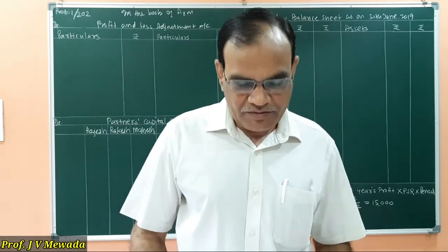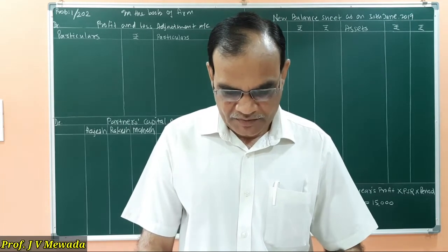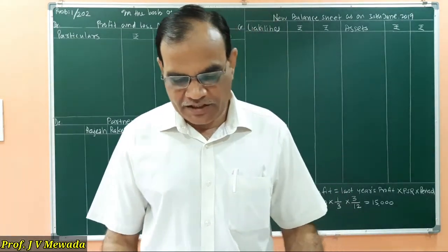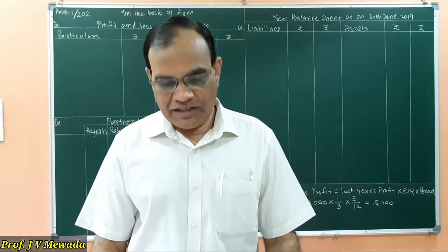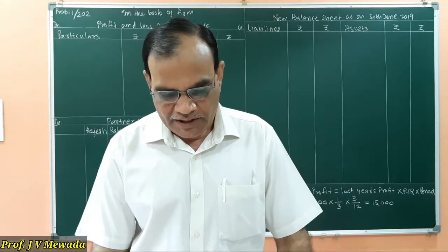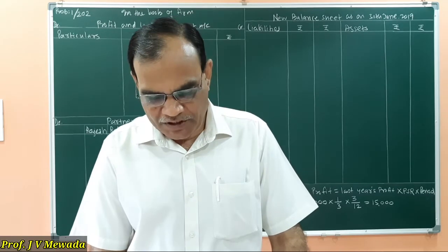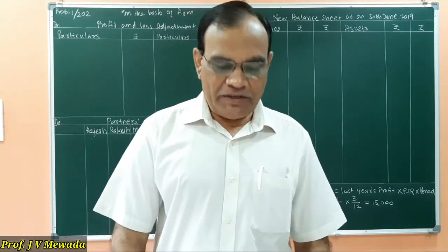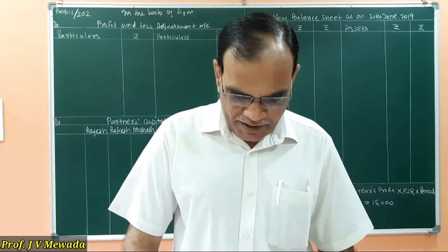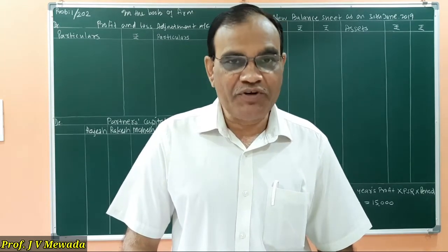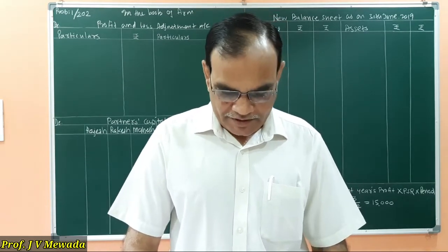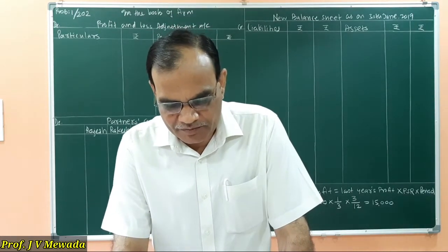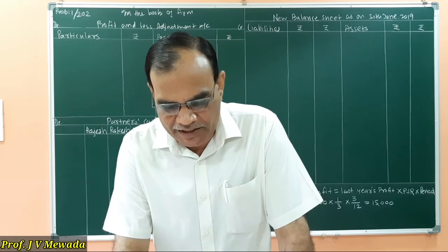First, we will read the sum. We are having 3 partners: Rajesh, Rakesh and Mahesh. They are equal partners and the balance sheet is given on 31st March 2019. One of the partners, Rajesh, the first partner, died on 30th June 2019 and the following adjustments were agreed upon.